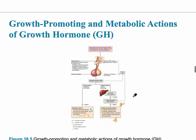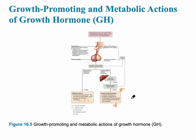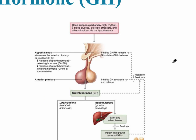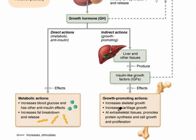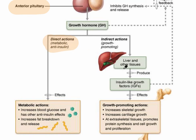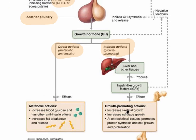This chart shows the growth promoting and metabolic actions of growth hormone. At the top of this flowchart, low deep sleep, low blood glucose, exercise, and other stimuli act via the hypothalamus. Growth hormone releasing hormone and growth hormone inhibiting hormone are the two hormones from the hypothalamus that stimulate the anterior pituitary to release growth hormone. Growth hormone then acts on target tissues in the body, with direct and indirect actions, ultimately increasing the rate of protein synthesis by cells in the skeletal and muscular system — an overall pro-growth effect.